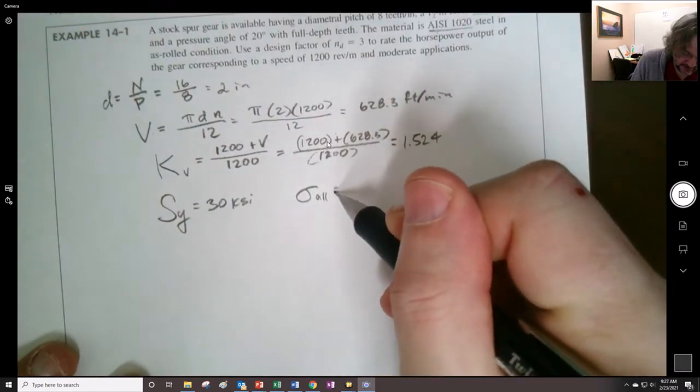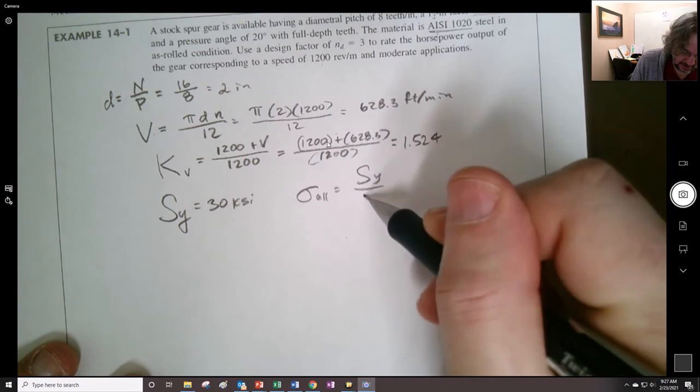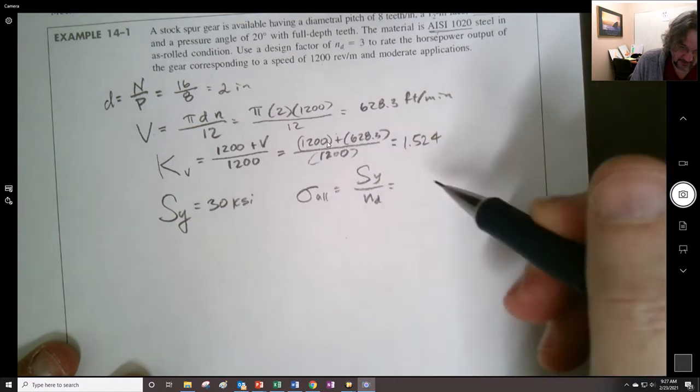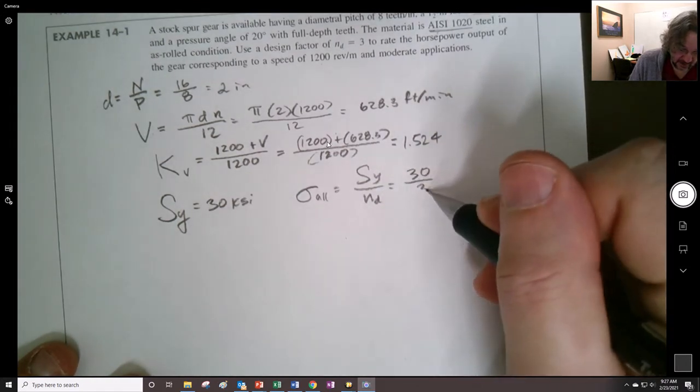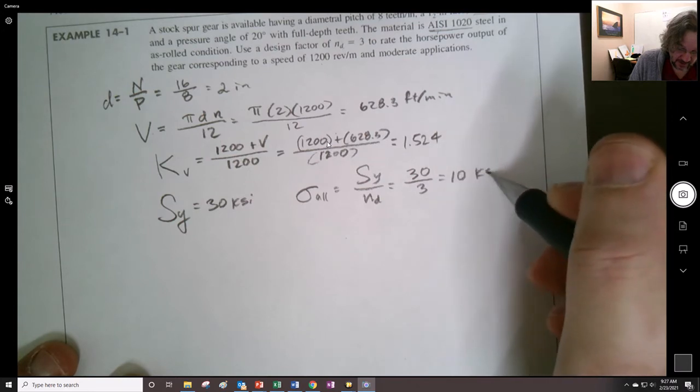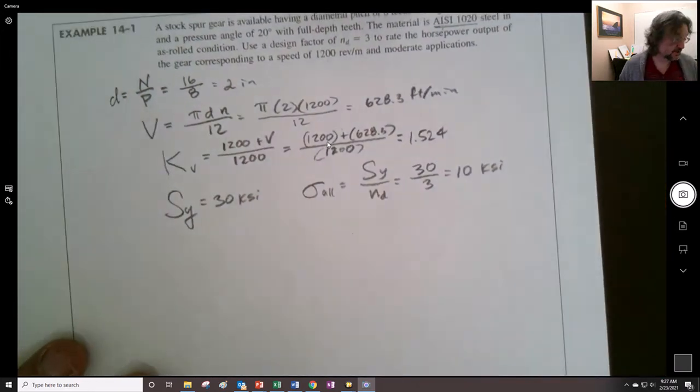We're going to take 30 KSI. They're showing KPSI. 30 KSI yield strength. So let's say that the yield strength is 30 KSI based on the available information we have. So the allowable stress is going to be the yield stress divided by the design factor. 30 divided by 3. So 10 KSI is what we're going to say this thing's allowed.